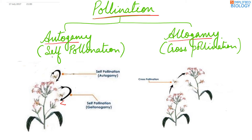Autogamy, as the name shows, is self-pollination. It is the transfer of pollens from the anther to the stigma of the same flower. When the pollen is transferred from the anther to the stigma of another flower of the same plant, it is known as geitonogamy.